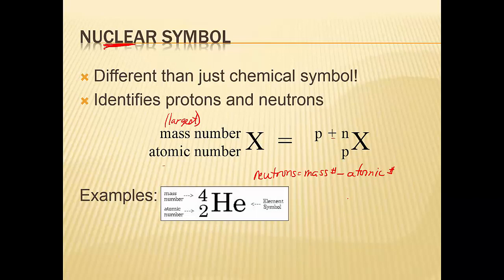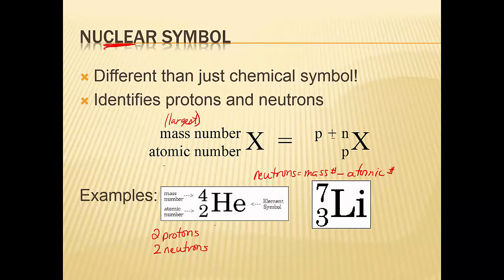For example, helium: mass number 4, atomic number 2. Helium has two protons because it's atomic number 2. It also has two neutrons — 4 minus 2 gives the neutrons. Or if you add the two together, you can work it backwards to get the mass number. Then lithium: mass number 7, atomic number 3. How many protons? 3. How many neutrons? 7 minus 3 equals 4 neutrons. It has 4 neutrons and 3 protons.